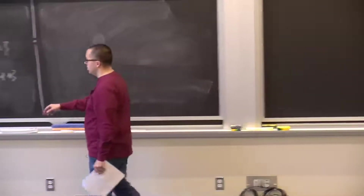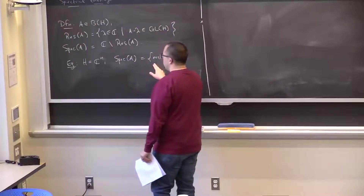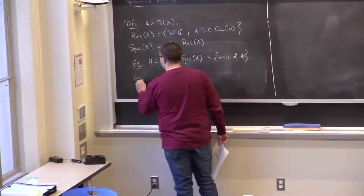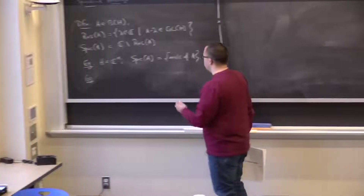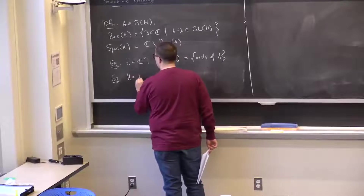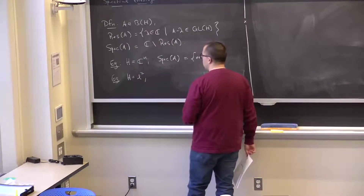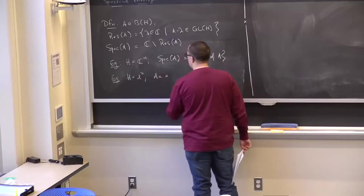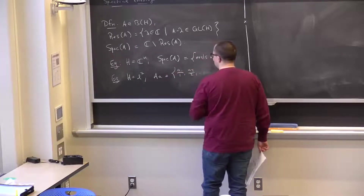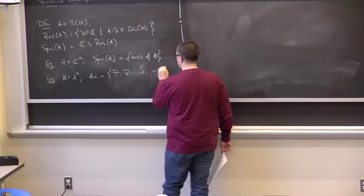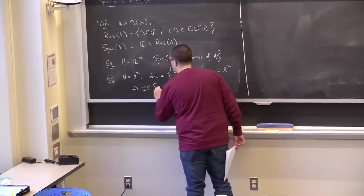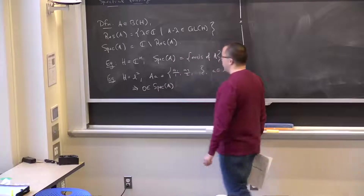In the finite-dimensional case, the spectrum is always just the eigenvalues of the matrix A—but not so in the infinite-dimensional setting. For example, in ℓ²(ℕ), if A sends a sequence (aₙ) to (a₁/1, a₂/2, a₃/3, …), then one can prove that 0 is in the spectrum of A.